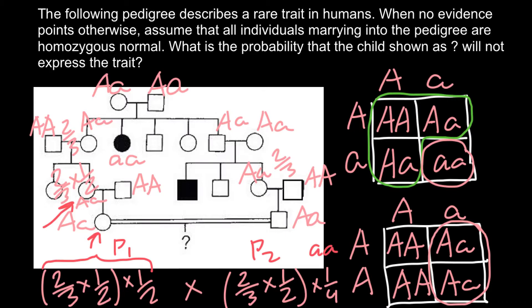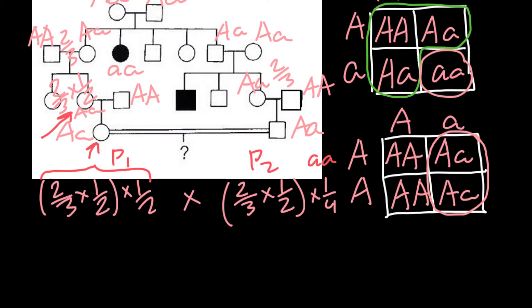Let's now do all the calculations. Two thirds multiplied by one half equals two sixths, or one third. One third multiplied by one half equals one sixth. So on this side we have one sixth. And two thirds multiplied by one half equals one third. Multiplying one sixth by one third by one quarter gives us one out of 72.